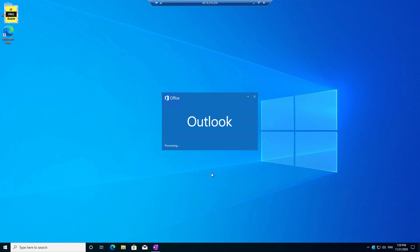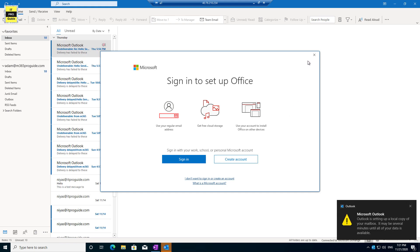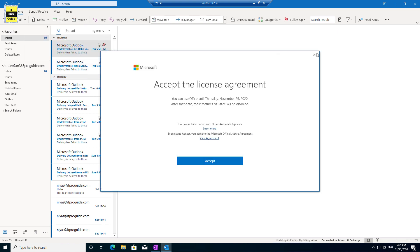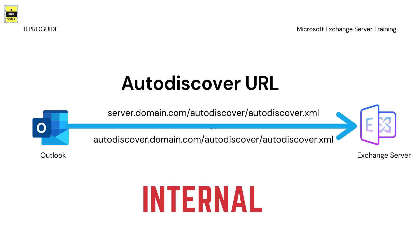Configuring Outlook is very simple once you have Auto Discover set up — you have nothing to manually configure. Auto Discover requires following best practices covered in previous videos. When you configure an Auto Discover URL, you have two options: you can configure it as your server's fully qualified domain name slash autodiscover slash autodiscover.xml, or as autodiscover.yourdomain.com slash autodiscover slash autodiscover.xml.